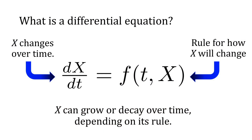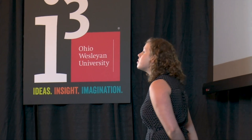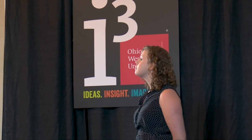A differential equation is a mathematical statement that tells us something about a quantity, say x, over time. It provides a rule for how x is going to change — x can grow or decay depending on its rule. Dynamical systems is the qualitative analysis of these types of equations.